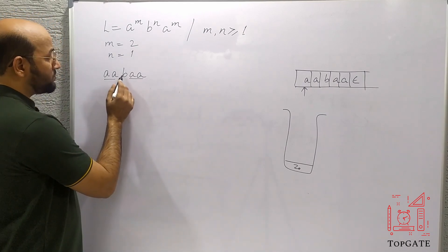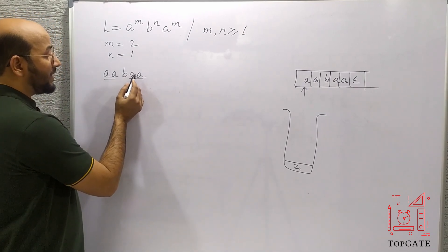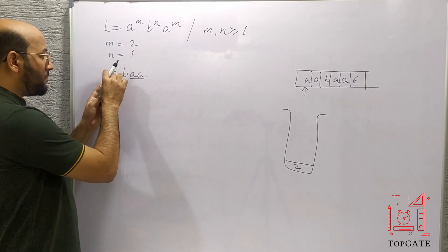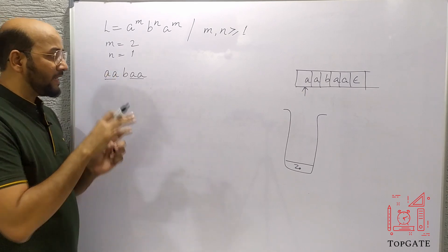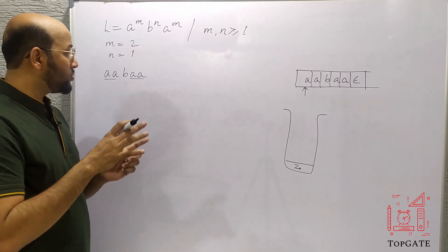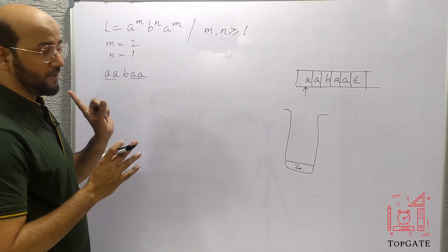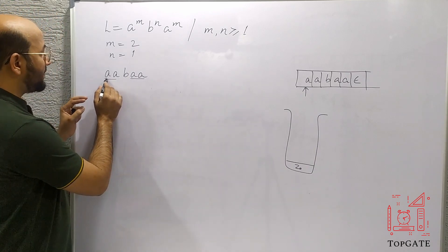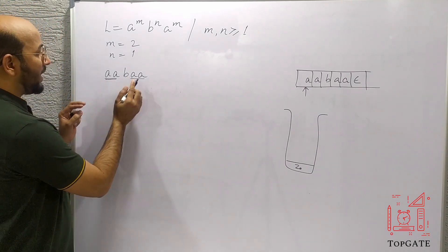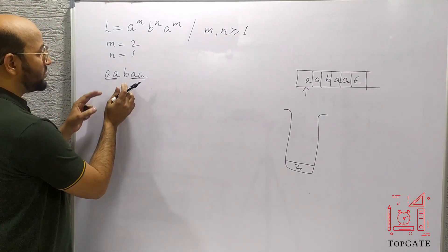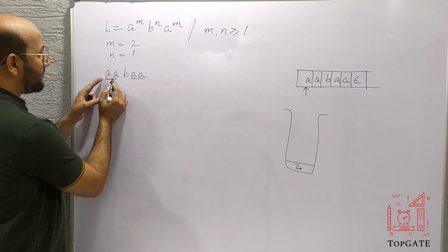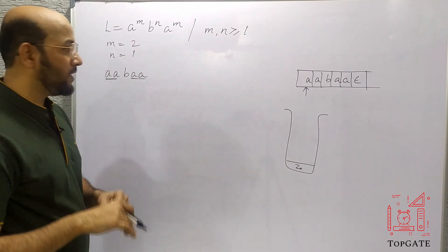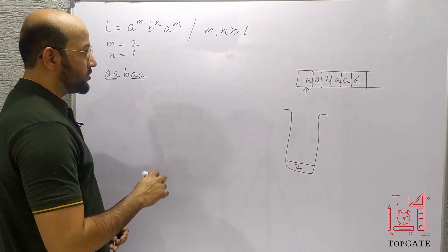After the B, the A's come again. What the PDA does is pop the A's that were pushed into the stack before the B. So the elements pushed in for the first group of A's will be popped out against the second group of A's, ensuring both groups are equal.